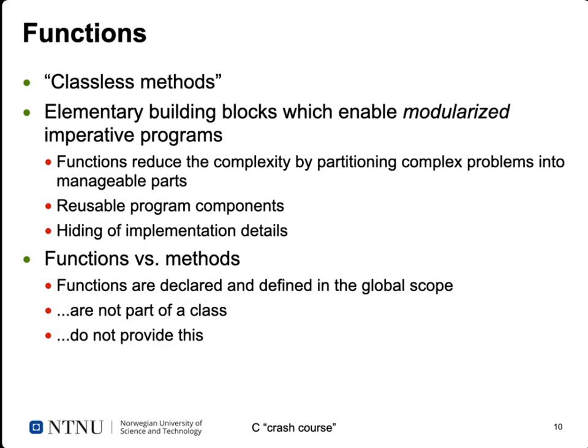The difference between a function in C and a method in an object-oriented language: functions are declared and defined in the global scope — you cannot nest functions inside functions, there are no local functions inside a function, they are not part of a class, and they do not provide the 'this' operator you might know from Java or C++, because we don't have any objects at all.